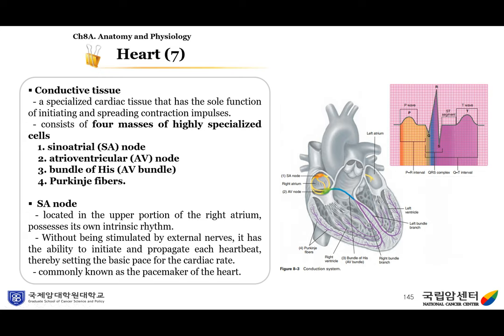Now I'm going to talk about the conduction system. The heart has conductive tissue — specialized cardiac tissue that has the sole function of initiating and spreading contraction impulses. The conductive tissue consists of four masses of specialized cells: the sinoatrial node (SA node), the atrioventricular node (AV node), the bundle of His (AV bundle), and the Purkinje fibers. Remember: SA node, AV node, bundle of His, and Purkinje fibers.